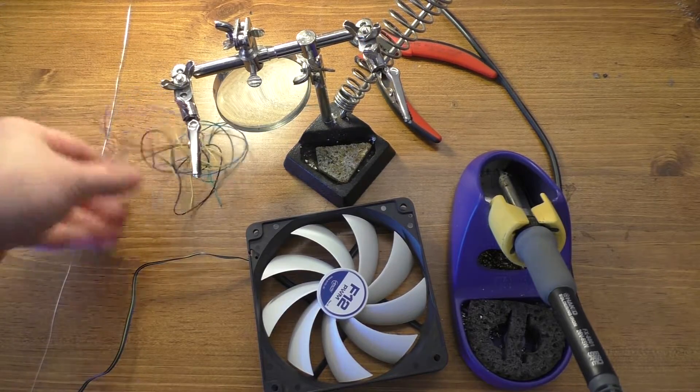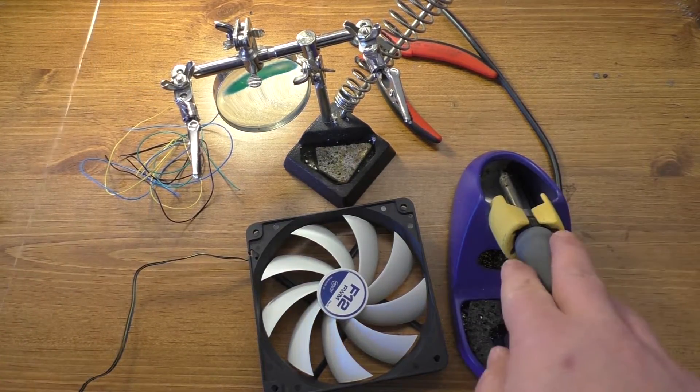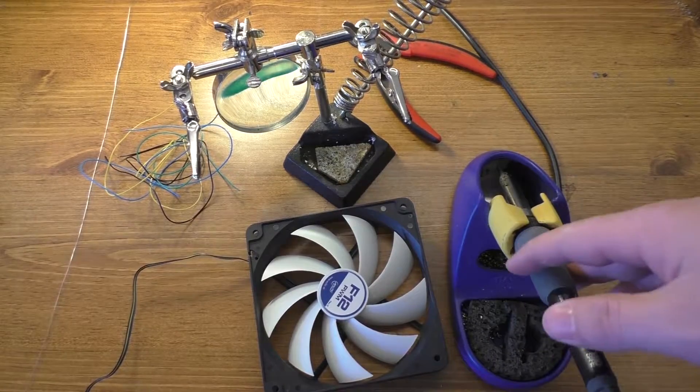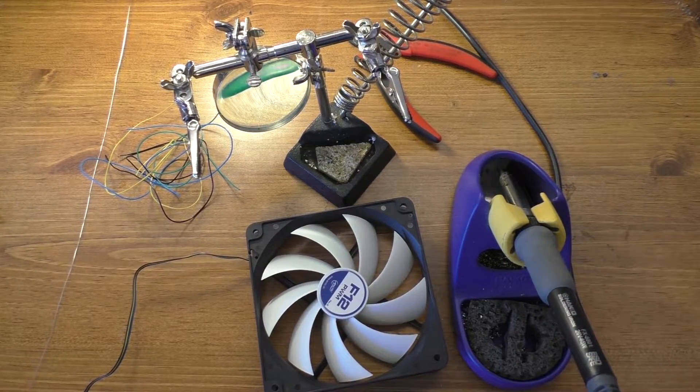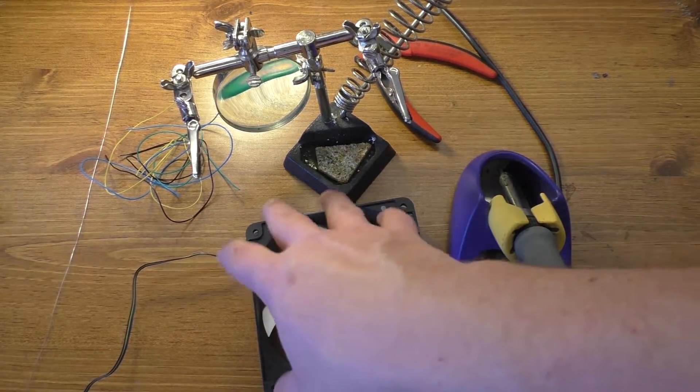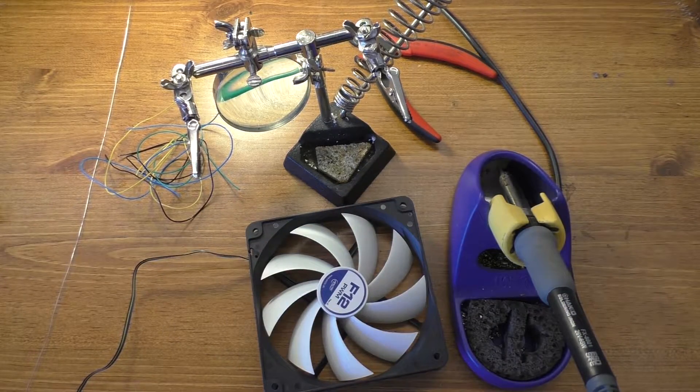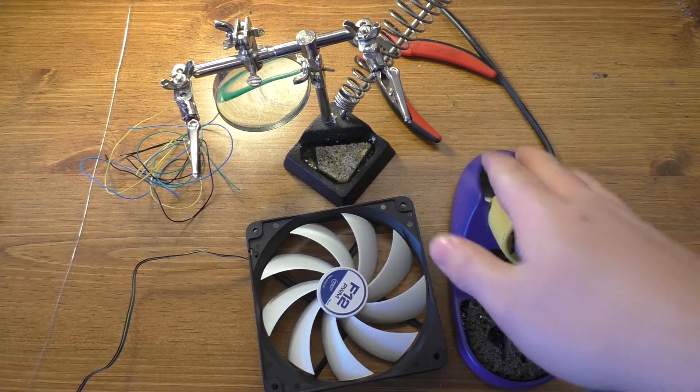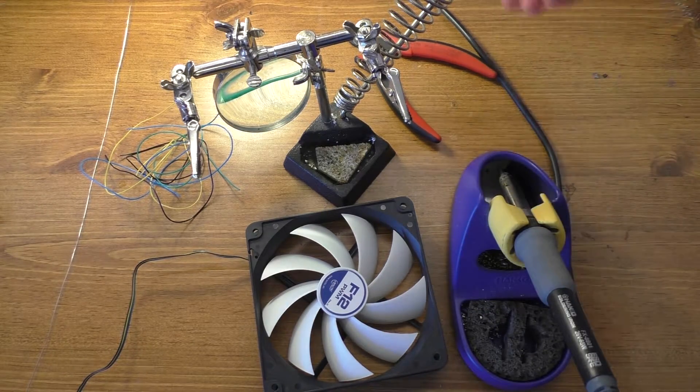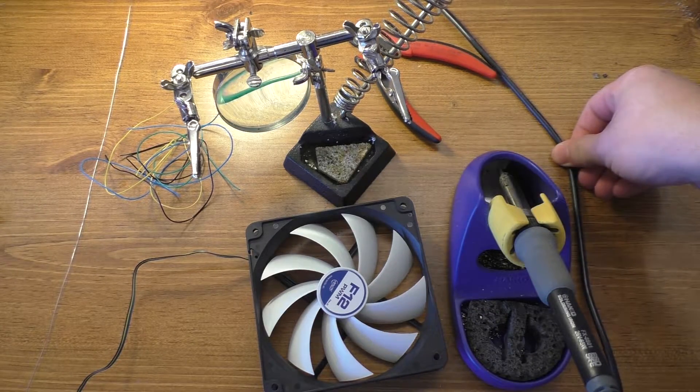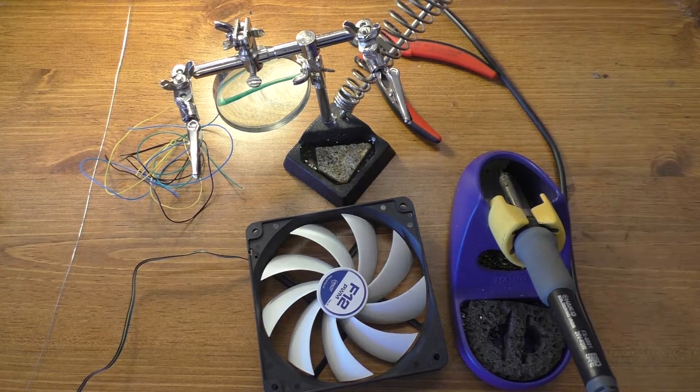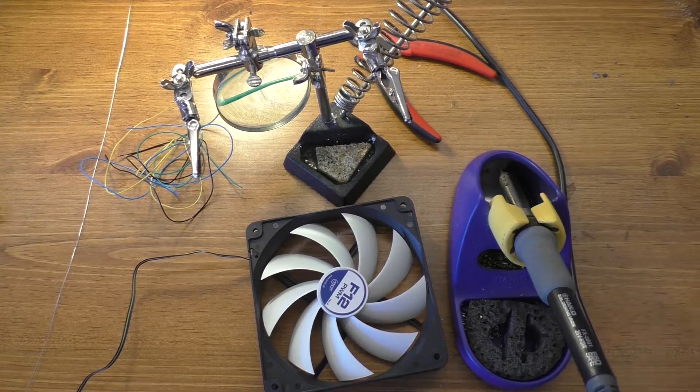So for your first time soldering, what you're going to need: soldering iron, obviously. It's not really critically important to have a temperature controlled one in order to solder wires like this because they're usually not all that sensitive, but in my case I have the Heiko FX-888D. And I'm going to have it set to 650 degrees Fahrenheit. Let me go ahead and turn that on, let it warm up.